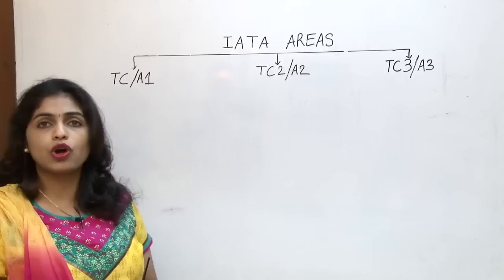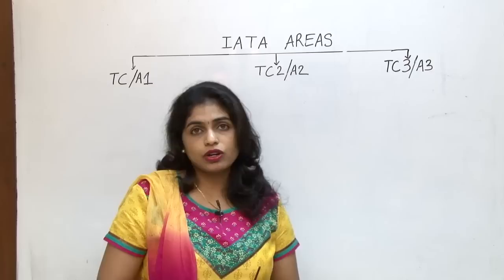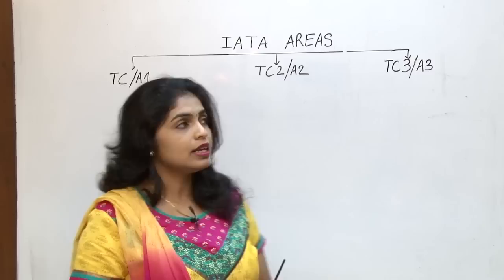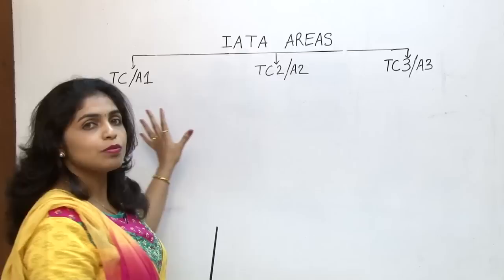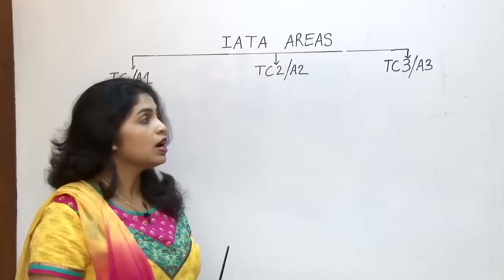It is also known as traffic conference area 1, traffic conference area 2, and traffic conference area 3. Similar to the world map we've seen: the North American continent will be in area 1; Europe, Africa, and Middle East will be in area 2; and Asia and the South West Pacific area would be in area 3.